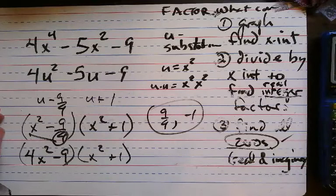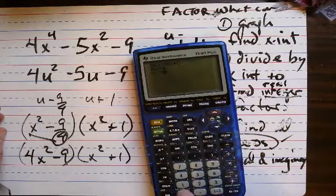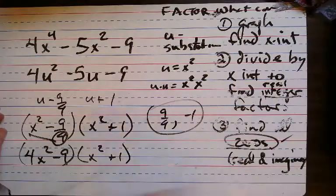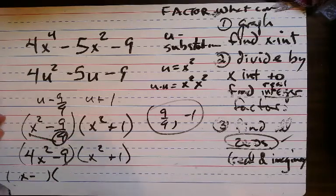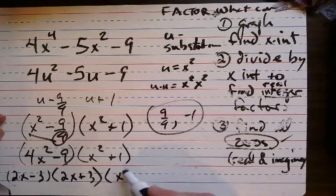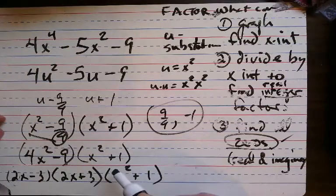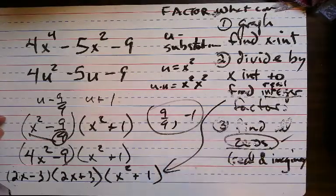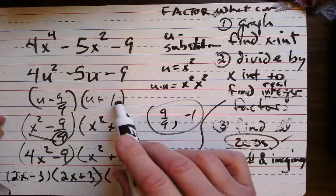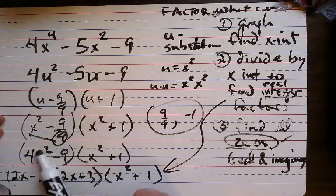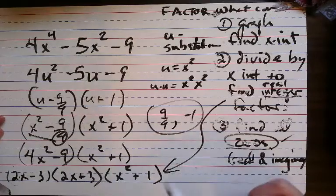Those are my factors. Actually, I think I can factor x squared minus 9/4. I'm going to put 4, 0, and negative 9 into the formula. Yes — this one is 2x minus 3 and 2x plus 3. And this one — x squared plus 1 — I cannot factor because it's got imaginary answers. So I found all the real factors right there. They have to be factors of x; here I had factors of u, and I don't want those. I want factors of x. Can I factor x squared minus 9/4? Yes. Can I factor x squared plus 1? No — imaginary answers.